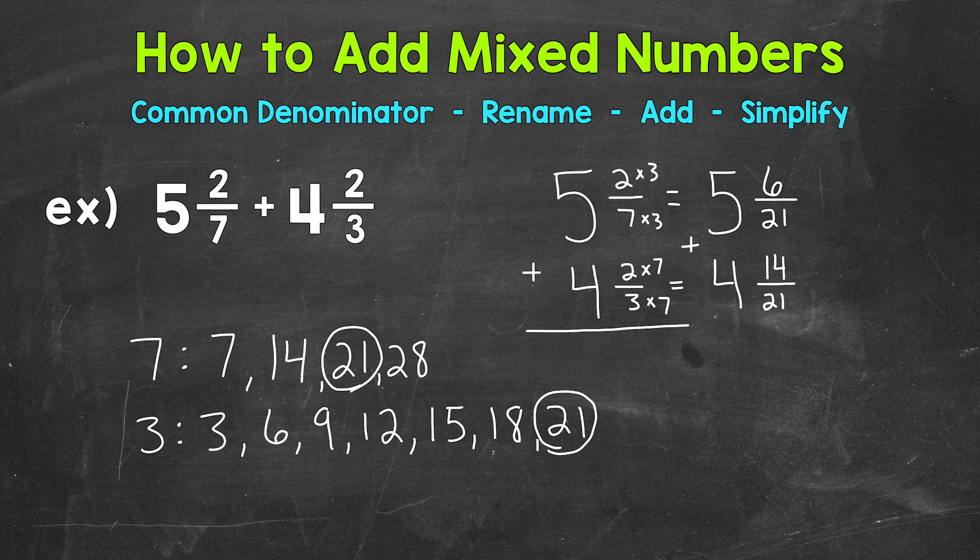So now we're ready to add. To recap, we found our common denominator of 21. Then we renamed the fractions of our mixed numbers using that common denominator of 21. Now that we have a common denominator between our fractions, we're able to add.